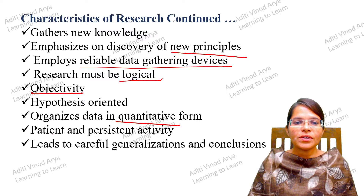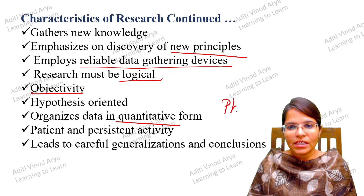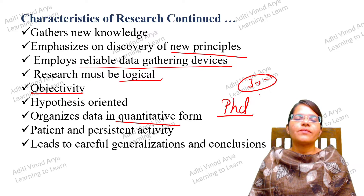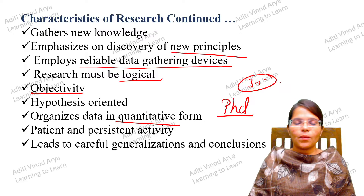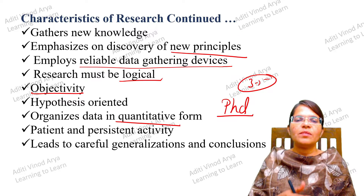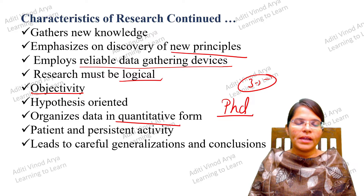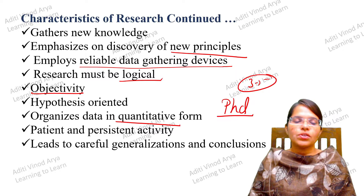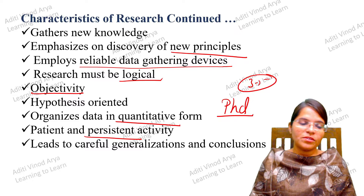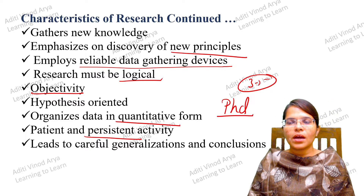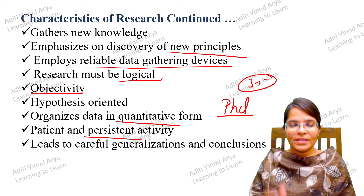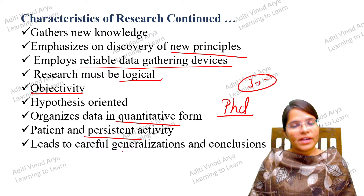Research is a patient and persistent activity. A PhD is a course where you give around three to five years of your life. You cannot be impatient — you have to wait for data to be collected, wait to understand it, and see results. Persistent means maintaining the same level of enthusiasm from the first day to the last day of research. You cannot give up halfway through.